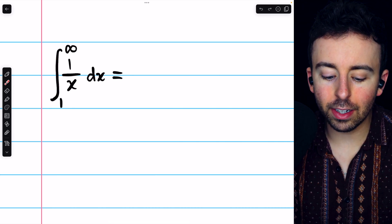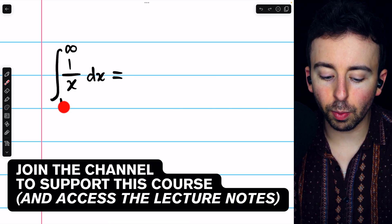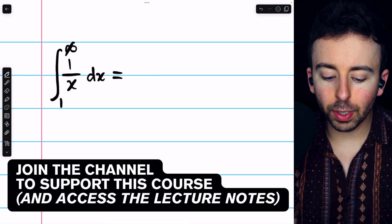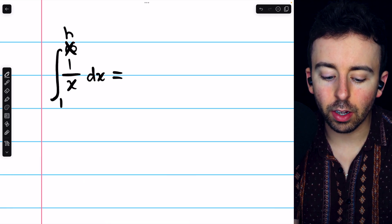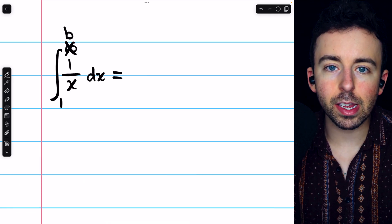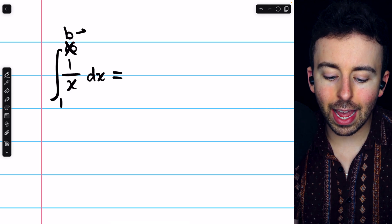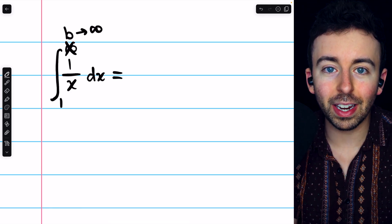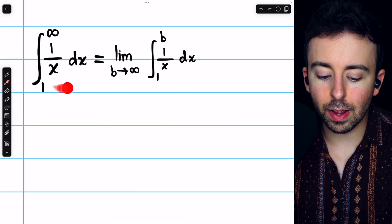To evaluate the improper integral of 1 over x from 1 to infinity, we'll replace that upper bound of infinity with a variable, say b, and then consider the limit as b goes to infinity. So by definition of an improper integral,